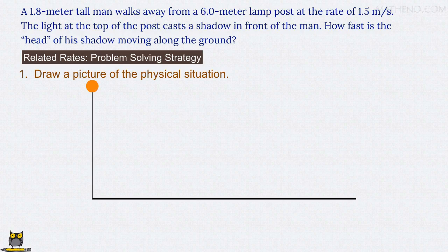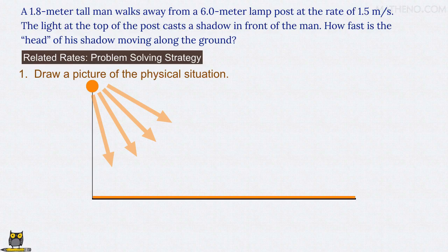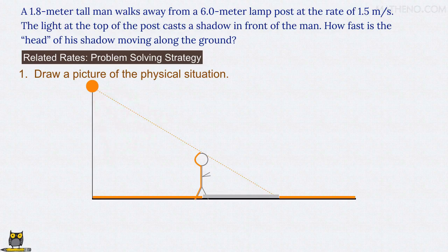Some of the light that leaves the lamp strikes the ground, thereby illuminating it. When there's a man standing there, the light that hits his back doesn't reach the ground, thus producing a shadow in front of him. The shadow goes from his feet to a point that's determined by the line that passes from the lamp along the top of his head and then onto the ground.